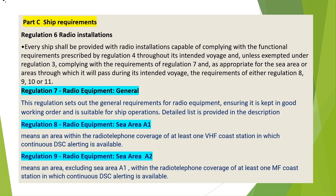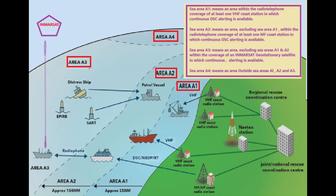Regulation 7: Radio Equipment — General. This regulation sets out the general requirements for radio equipment, ensuring it is kept in good working order and is suitable for ship operations. A detailed list is provided in the description. Regulation 8: Radio Equipment — Sea Area A1. Means an area within the radio telephone coverage of at least one VHF coast station in which continuous DSC alerting is available.